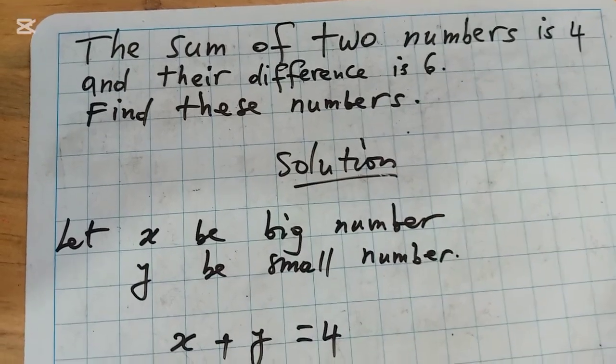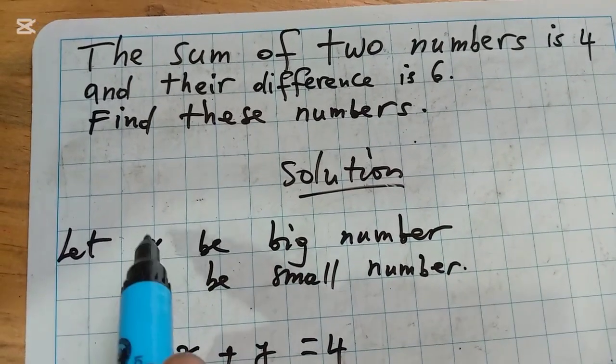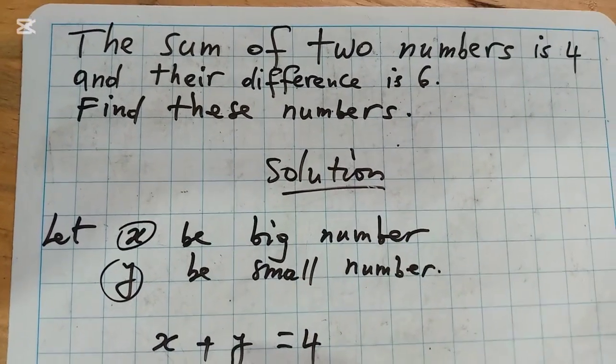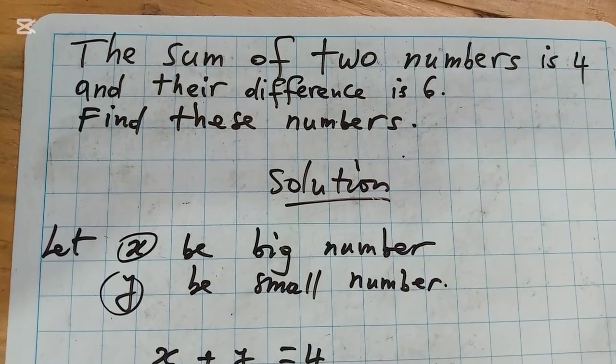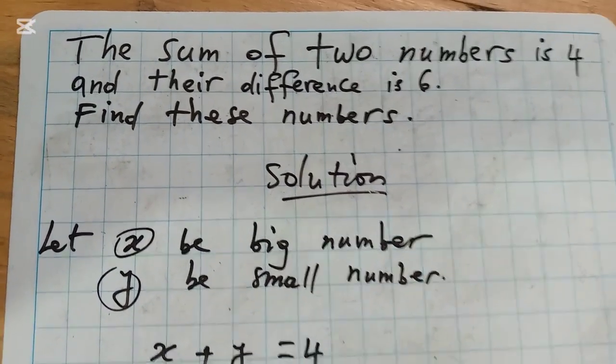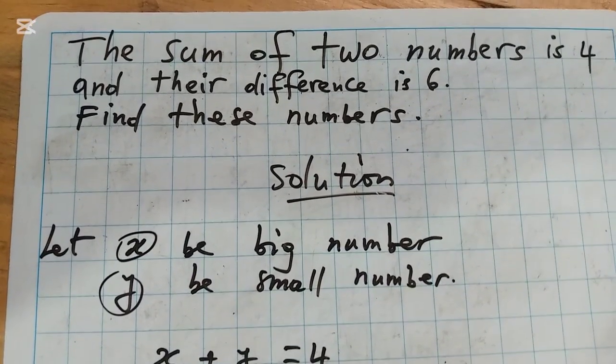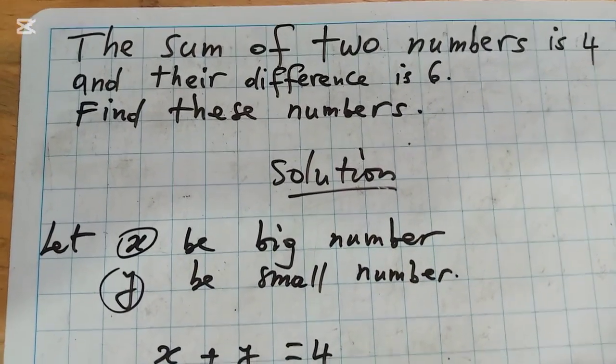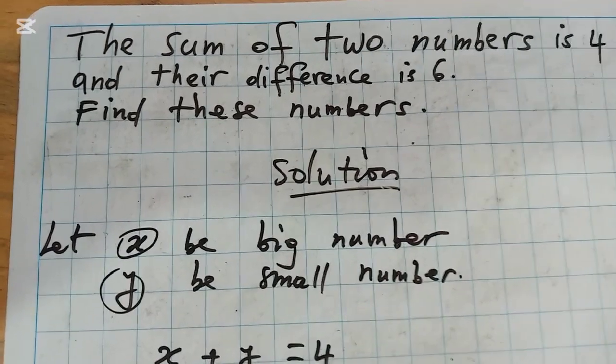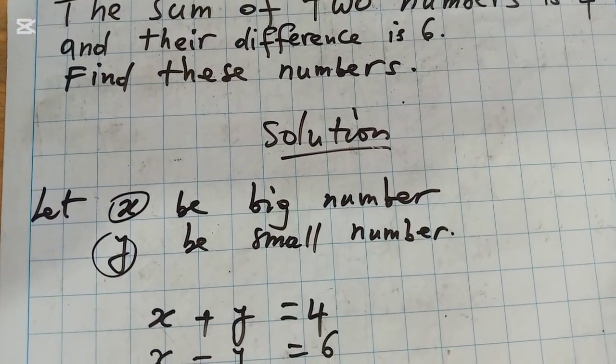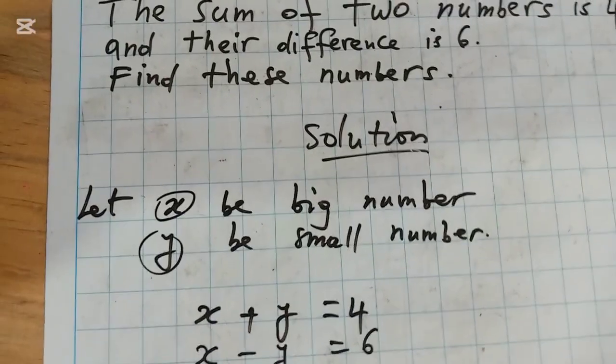This means X minus Y equals 6. We need to find the values of these two variables, X and Y.